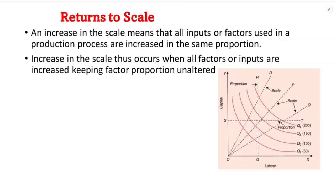An increase in scale means that all inputs or factors used in the production process are increased in the same proportion. The scale change means both inputs — capital and labor — increase in the same proportion. For example, capital increases by 20% and labor increases by 20%. That is a change in scale of production. An increase in scale occurs when all factors or inputs are increased keeping factor proportion unaltered.